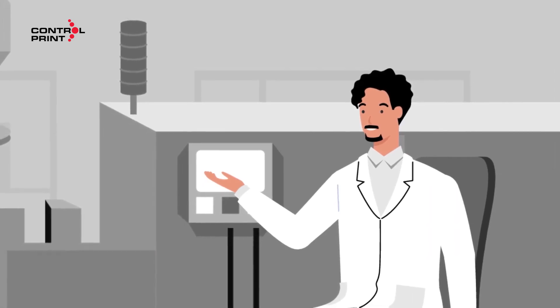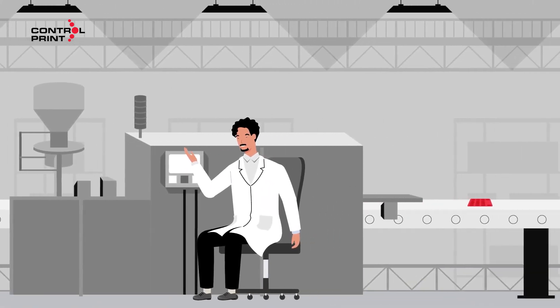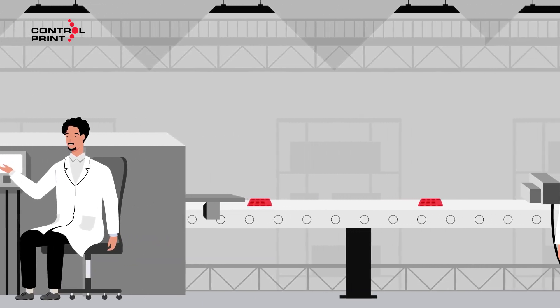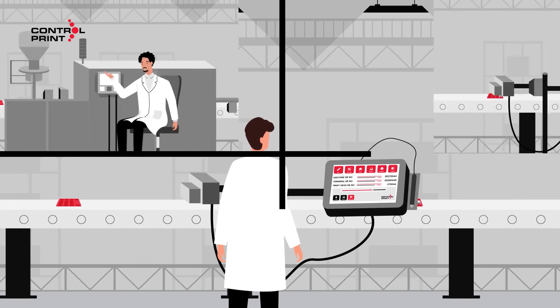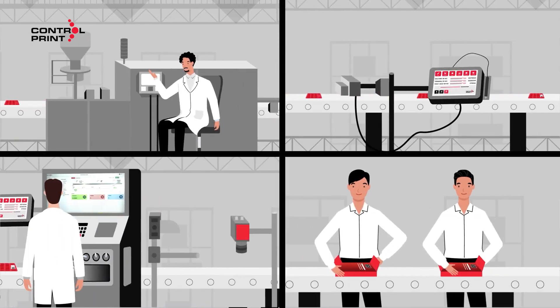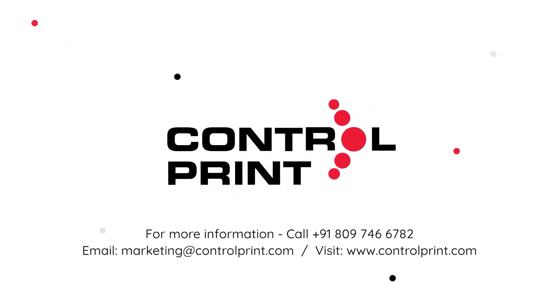ControlPrint's innovative solutions enhance every stage of the manufacturing and supply chain process. From precise labeling to seamless traceability, our technology ensures efficiency, accuracy and compliance. With ControlPrint, optimize your operations at every level.